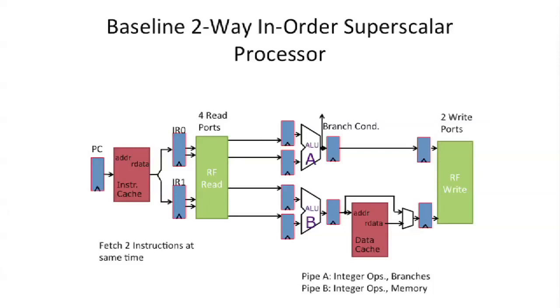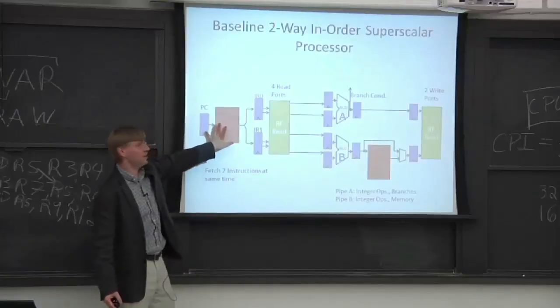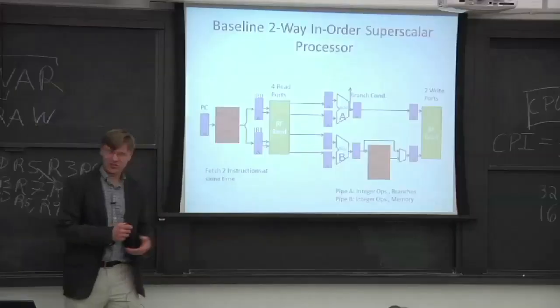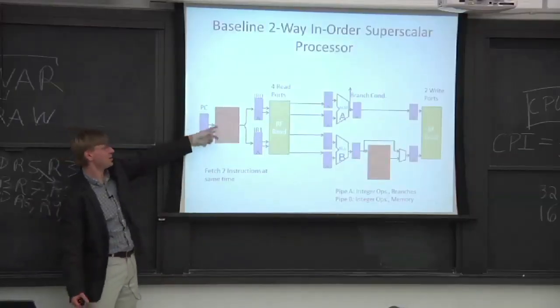So the first question I have here, is this good enough? Is this pipeline diagram good enough in the fetch stage? We stick some addresses in, we get two instructions out. So that's a good question, is do we do PC and PC plus four?